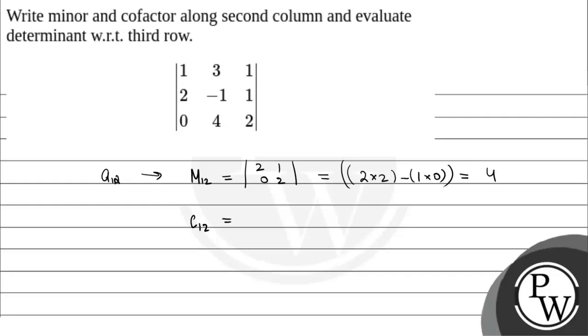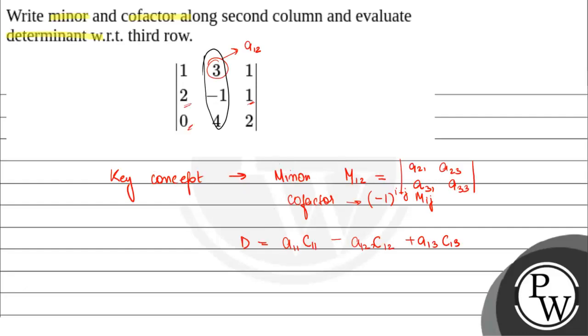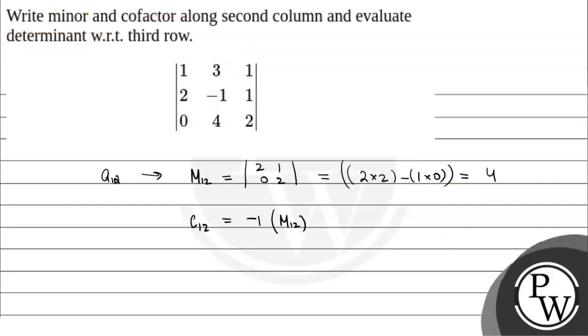Now for the cofactor C₁₂. The cofactor is basically minus 1 to the power i plus j times the minor. Here i is 1 and j is 2, so 1 plus 2 equals 3. This will be minus 1 raised to the power 3 times 4, which equals minus 4.